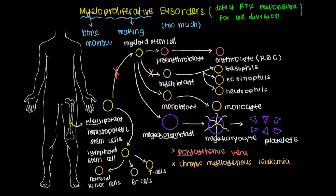If we have a defect in the platelet lineage around here, we can have a disorder that's known as essential thrombocytemia. Thrombocyte means the same thing as platelets.